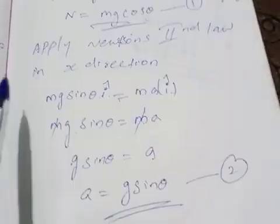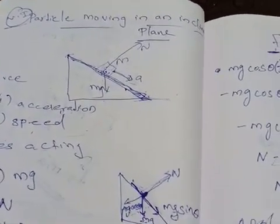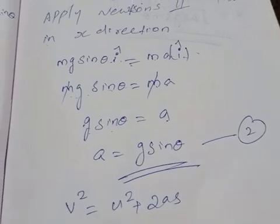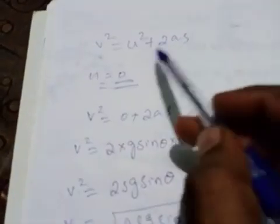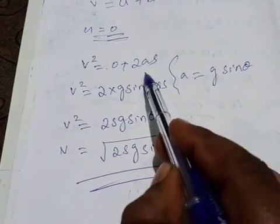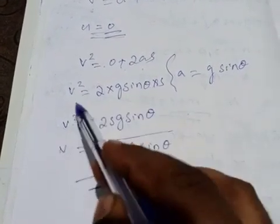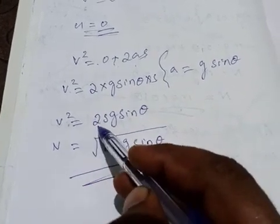Now finding the speed of the object to reach the bottom using Newton's kinematic equation: V squared equals U squared plus 2AS. Initial velocity U equals zero. So V squared equals 0 plus 2AS. Acceleration A equals g sin theta. Therefore V squared equals 2 times g sin theta times S, giving V squared equals 2Sg sin theta. So V equals root of 2Sg sin theta.